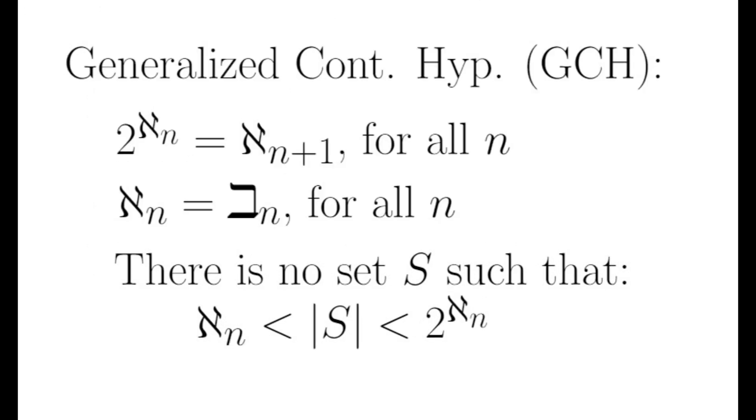Assuming the continuum hypothesis is true, what about the remaining Beth numbers? Do they all match up with the alephs? In other words, is it true that aleph n plus 1 equals 2 to the aleph n for every n? This would mean that for any set A, the cardinality of the power set of A is the smallest infinity greater than the cardinality of A.